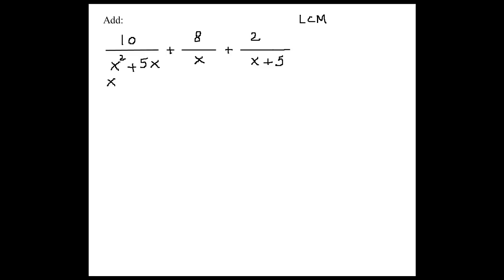So you have to find the LCM or LCD, least common multiple or least common denominator here. So we factor the first one here. We get x times x plus 5. You're absolutely correct.